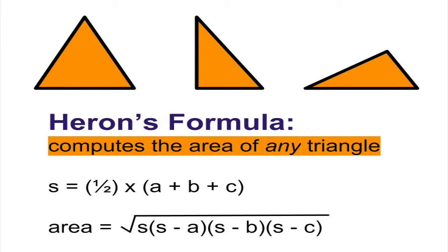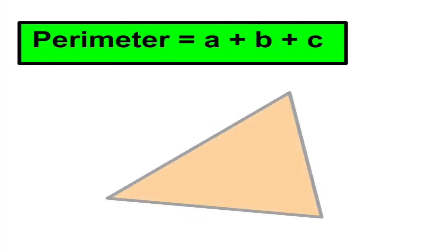Then, we can compute the area as the square root of s times s minus side length a, s minus side length b, and s minus side length c. To get the perimeter, we simply add up the side lengths.